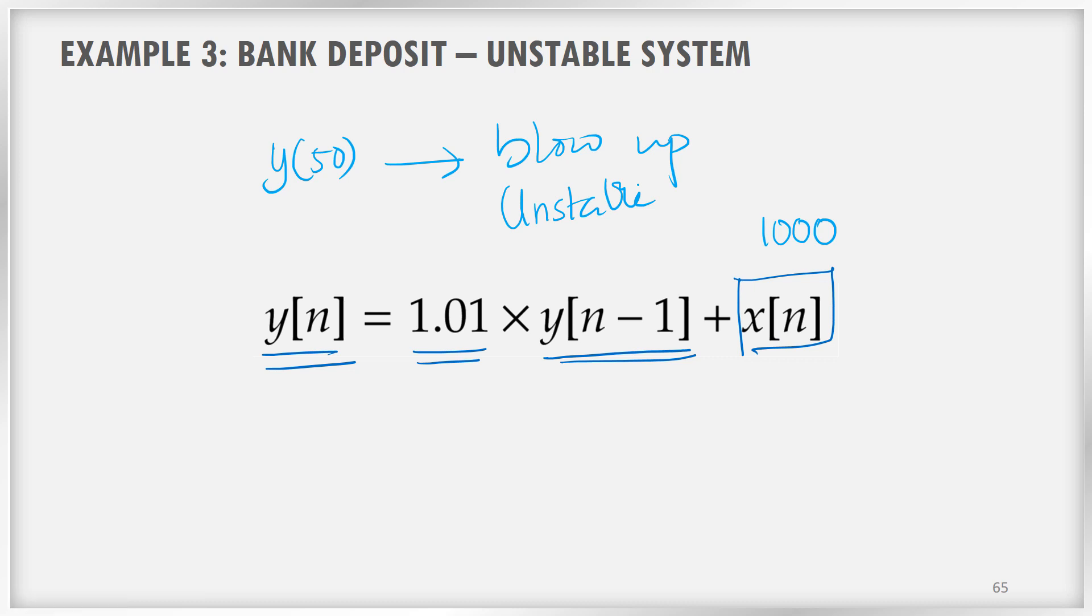Because there is no withdrawal and there is no bank charges. Because of that reason, if it follows this equation, actually here, this is the previous year sum into 1.01. Even though the increment is very small, it will result in a huge amount of value after some time. So this is an example of an unstable system.